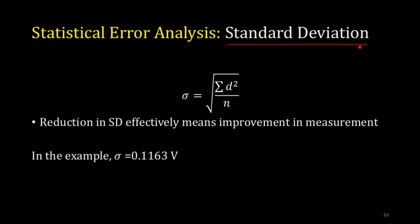Standard deviation is a statistical tool we are already familiar with. You take the square of each deviation, sum them, take the average, and then take the square root. Using this equation you get the standard deviation. A lower standard deviation means your measurements are improving. From the example, the standard deviation calculates to 0.1163 volts for a 100 volt nominal value.